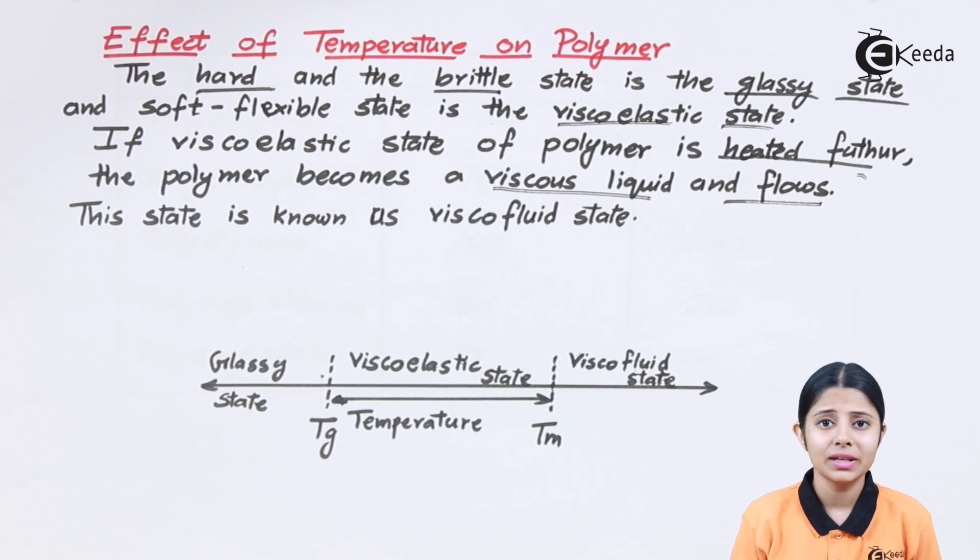What exactly is the second state? What is viscoelastic? Viscoelastic is a semi-solid kind of substance which shows elasticity and also shows some kind of solid structure. At viscoelastic state there will be elasticity in the polymer.